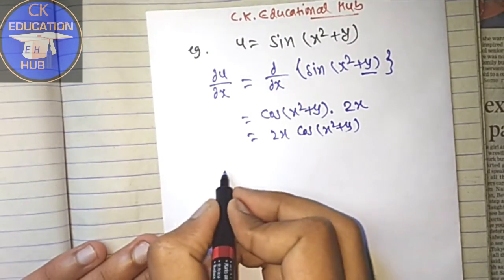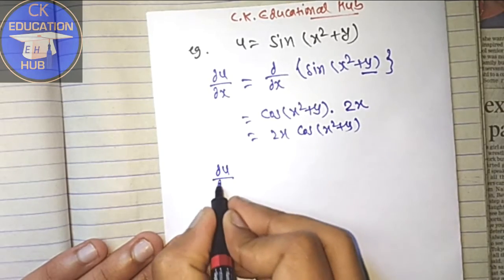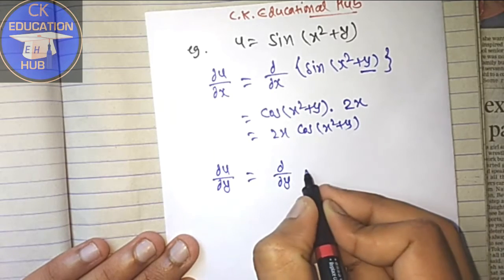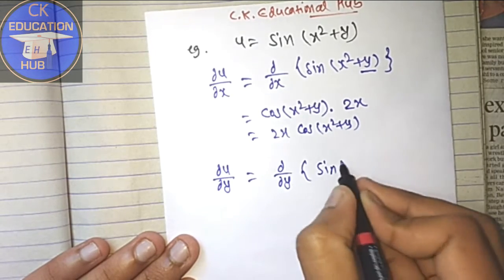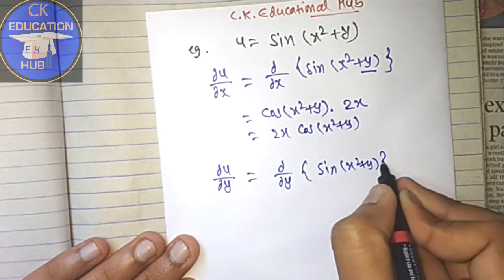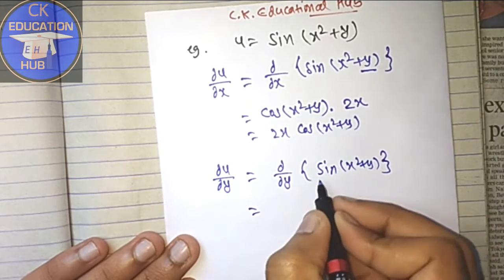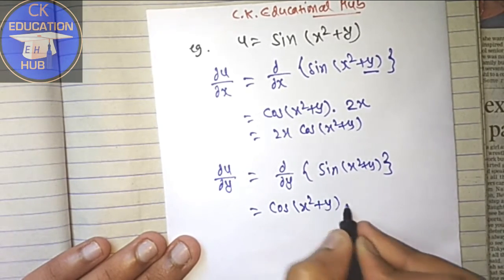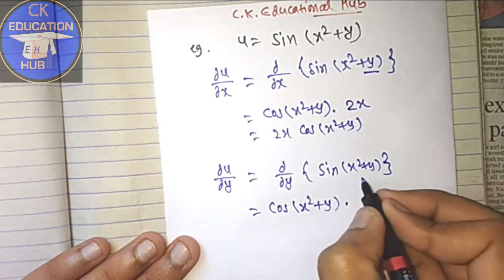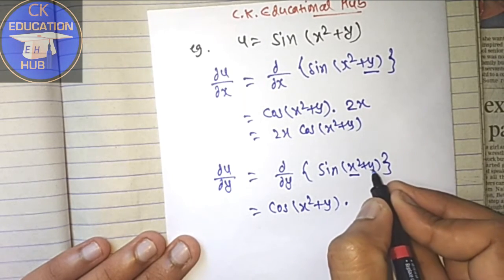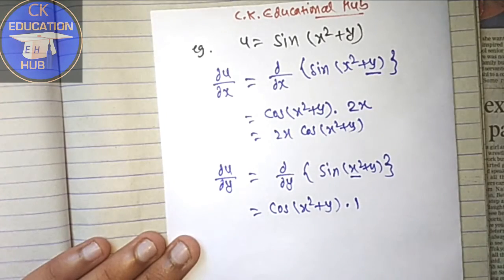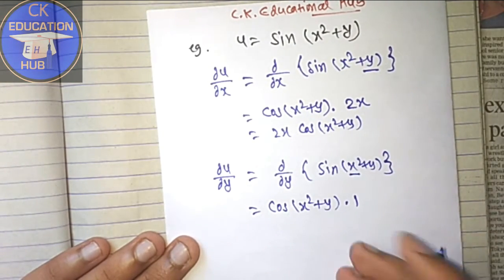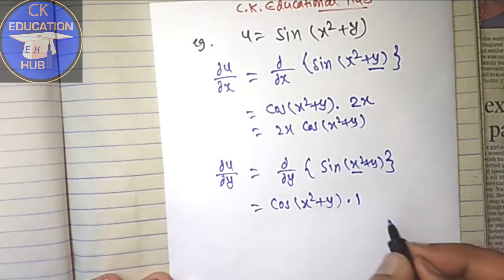So del u / del x = 2x·cos(x² + y). For del u / del y = del/del y of sin(x² + y), we consider x as a constant. By chain rule, the derivative of sin is cos(x² + y), and the derivative of y is 1. So del u / del y = cos(x² + y).